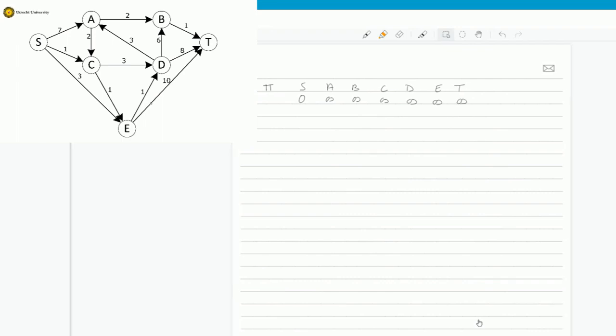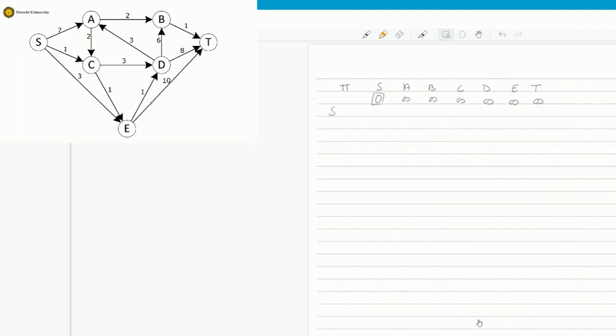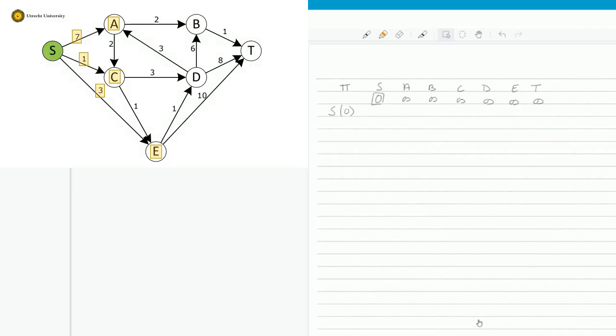So we start looking into the node that has the smallest value. That is S with value 0. So this is the lowest one. So we start at S. Remember that was distance 0. And we look to all the nodes that we can reach from S. So in our case, it is A, C and E. A is with distance 7, so 0 plus 7 is 7. Node C is 0 plus 1 is 1. And E, for E we have S, 0 plus 3 is 3. And all the others are still infinite. So B is infinite, D is infinite and T is infinite. And S we already have.